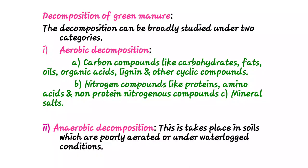Aerobic decomposition means the material is decomposed in the presence of oxygen, and it is a relatively slow process. Anaerobic decomposition occurs in waterlogged or poorly aerated soils where the pore spaces are filled with water — that is, a waterlogged condition. Under those conditions, anaerobic decomposition takes place. These are the two types of decomposition regarding green manure crops.